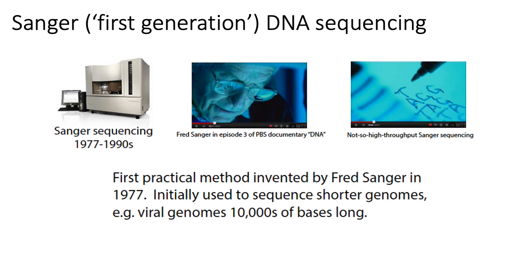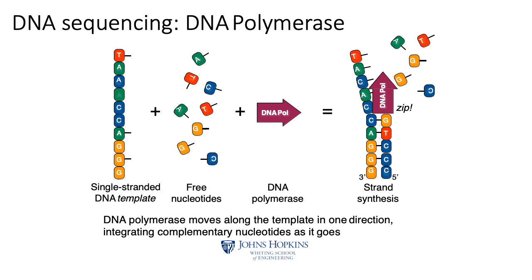The sequencing technologies people use nowadays come down to Illumina, nanopore, and PacBio, but they weren't the first sequencing technologies available. The Sanger method was really the first generation of DNA sequencing methods, invented by Fred Sanger back in the 1970s. This method was initially used to sequence shorter genomes. Interestingly, Fred Sanger is one of the few people who actually won two different Nobel Prizes.